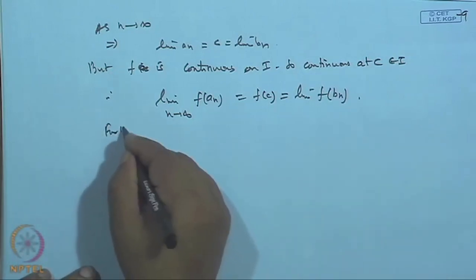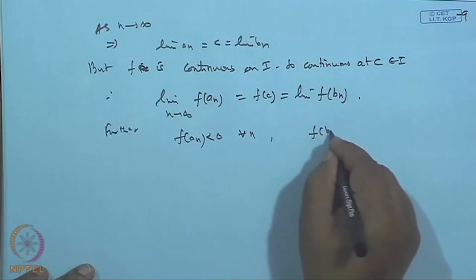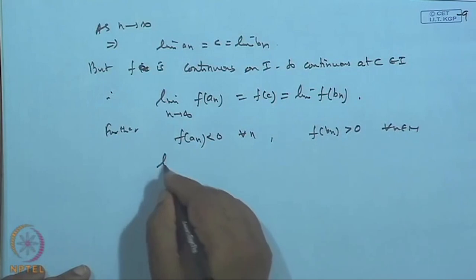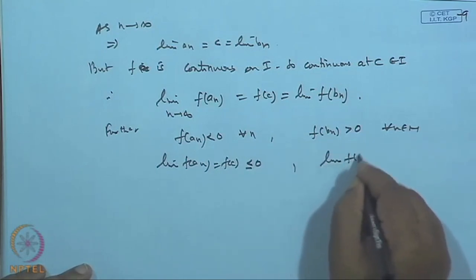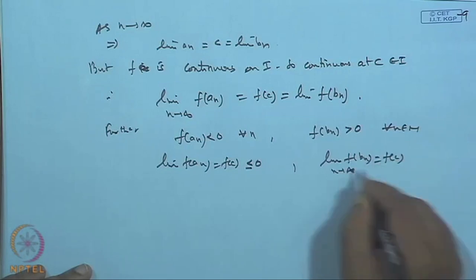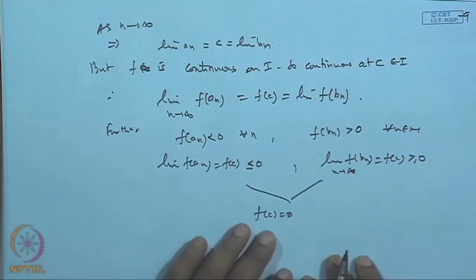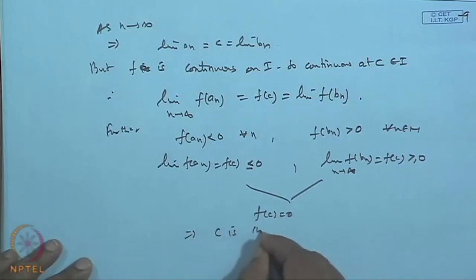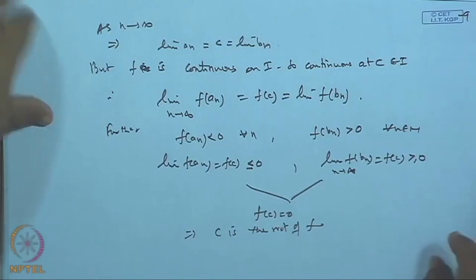Since f(a_n) < 0 for all n, the limit f(c) ≤ 0. Since f(b_n) > 0 for all n, the limit f(c) ≥ 0. Combining these, f(c) = 0, proving c is a root of f. This result is used in numerical methods — the bisection method — to find the approximate root of f(x) = 0.